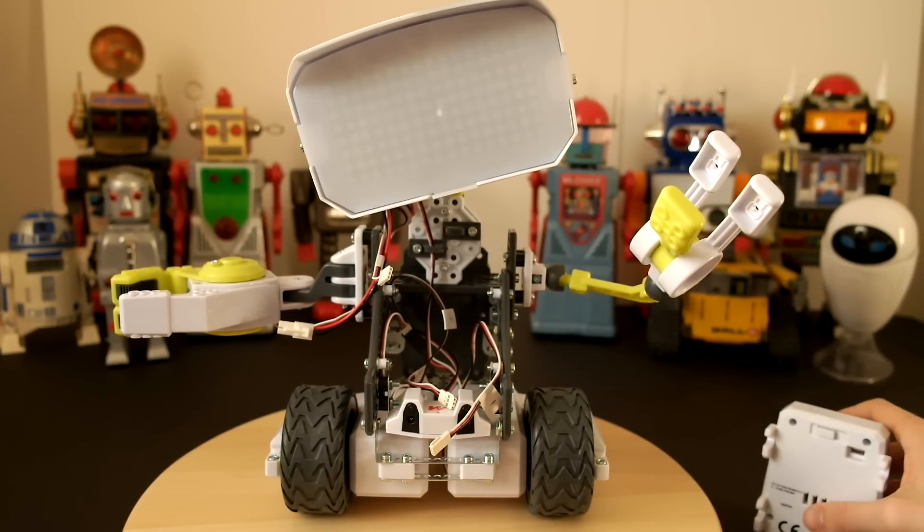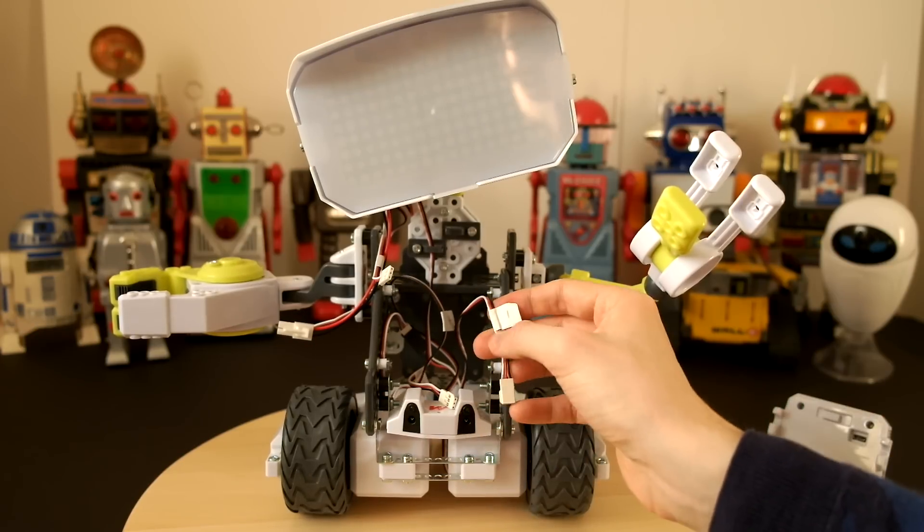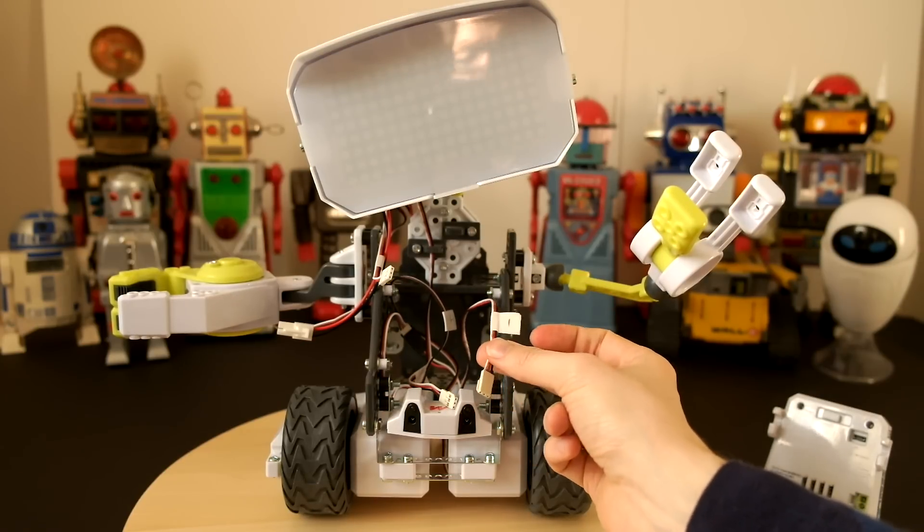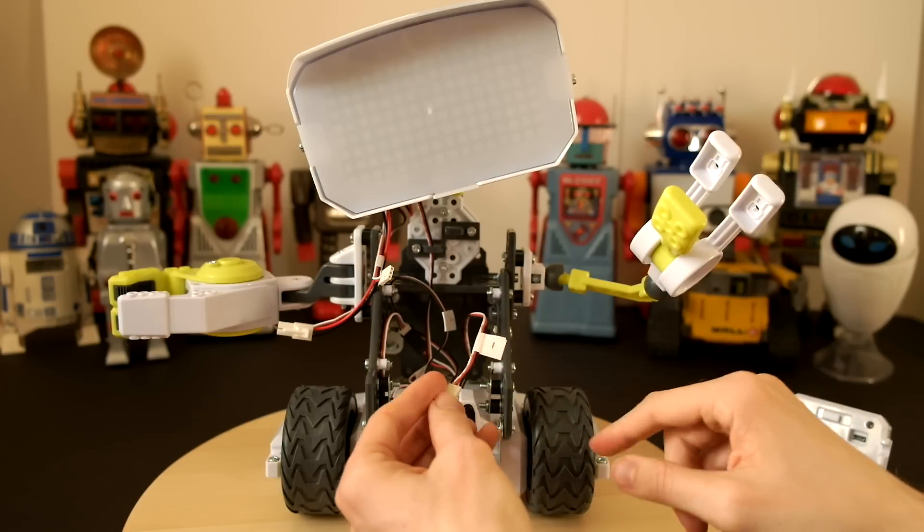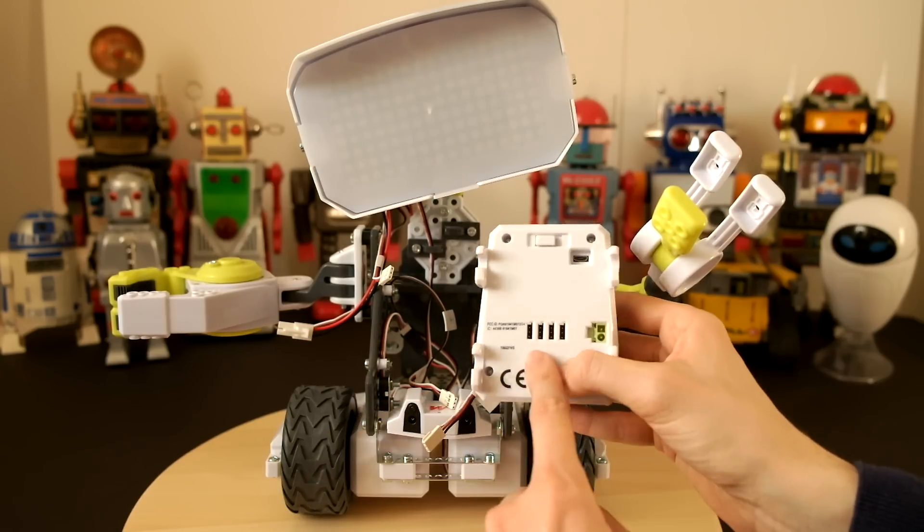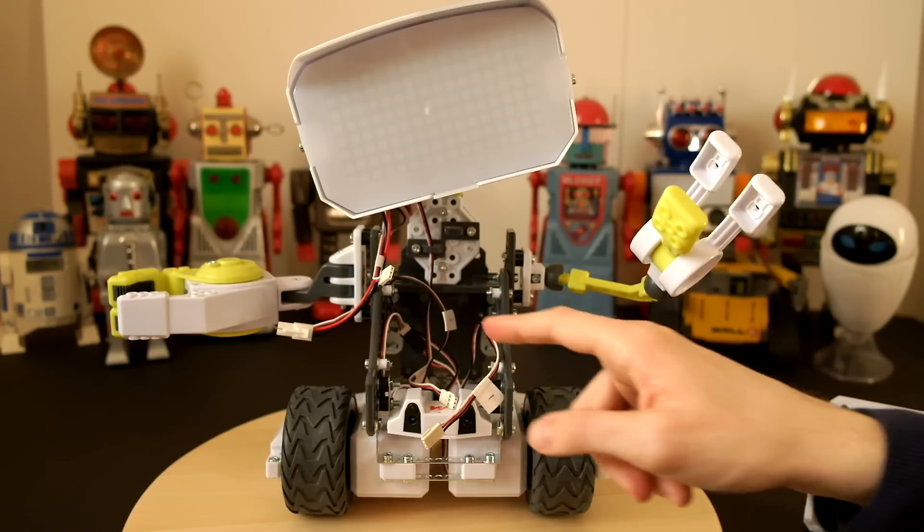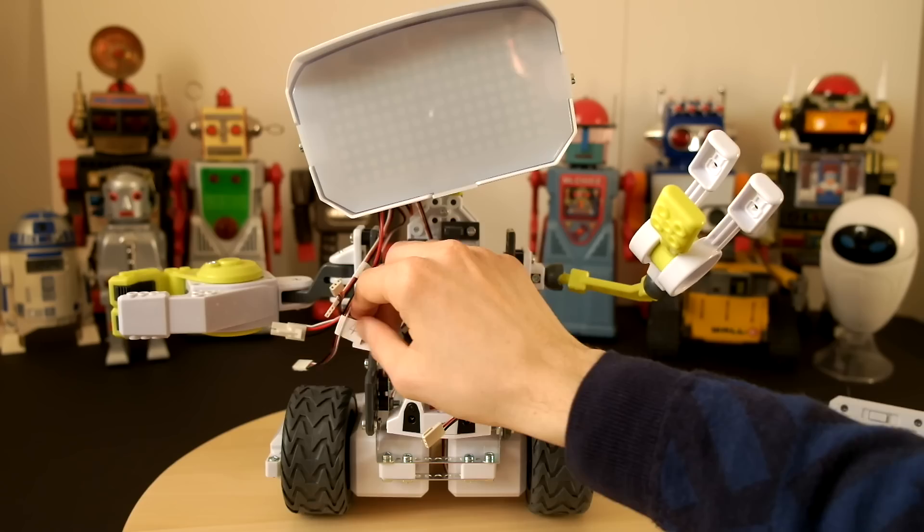So as you probably saw in my step-by-step video, I labeled the four wires with a simple sticker system so that I knew instantly which slot they needed to go back in. So what I'm going to do is show you how the wiring works, where each wire goes.